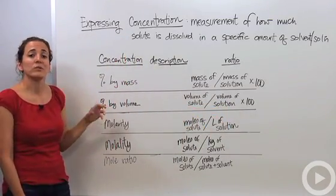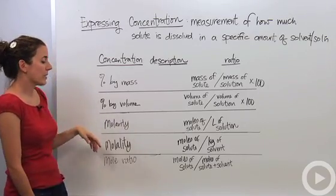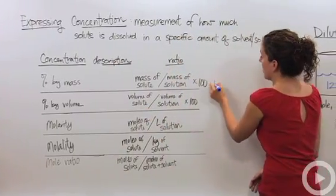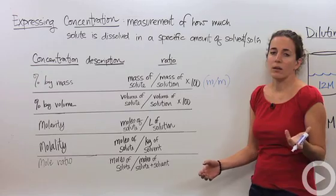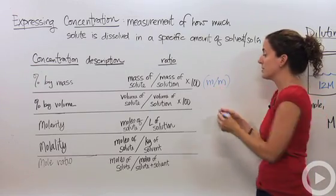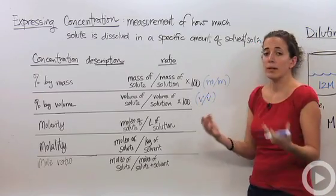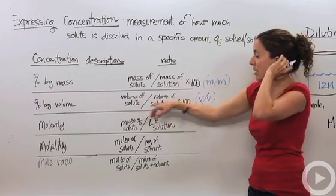You can also do percent by volume, and these are things when you're talking about liquids. You might even see symbols like on a product. This means percent by mass. This means percent by volume. You might see like 70 VV. That means percent by volume. That's volume of solute over volume of solution.